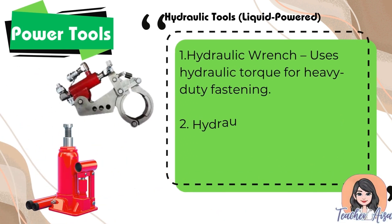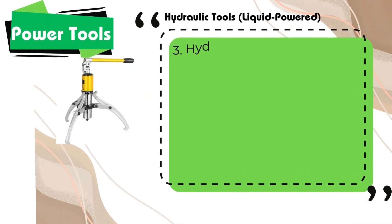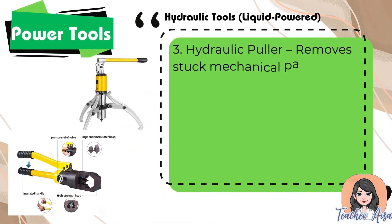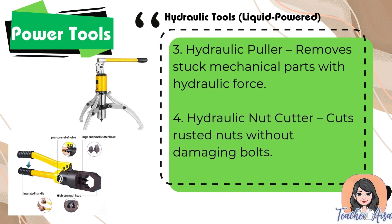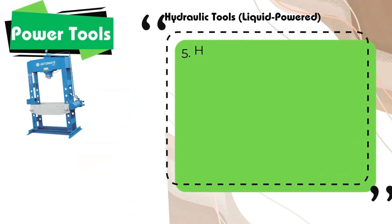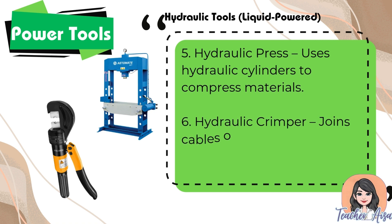Two: hydraulic jack — lifts heavy loads with hydraulic pressure. Three: hydraulic puller — removes stuck mechanical parts with hydraulic force. Four: hydraulic nut cutter — cuts rusted nuts without damaging bolts. Five: hydraulic press — uses hydraulic cylinders to compress materials. Six: hydraulic crimper — joins cables or hoses using hydraulic force.